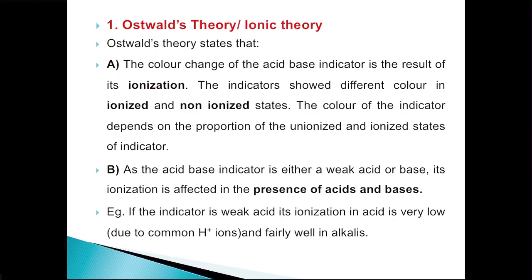The color of the indicator depends upon the proportion of unionized and ionized states of an indicator. So the indicator can exist in ionized form and unionized form, and the color of the indicator in these two forms will be different. The second point is that as the acid-base indicator is either a weak acid or a base, its ionization is affected by the presence of an acid or base.